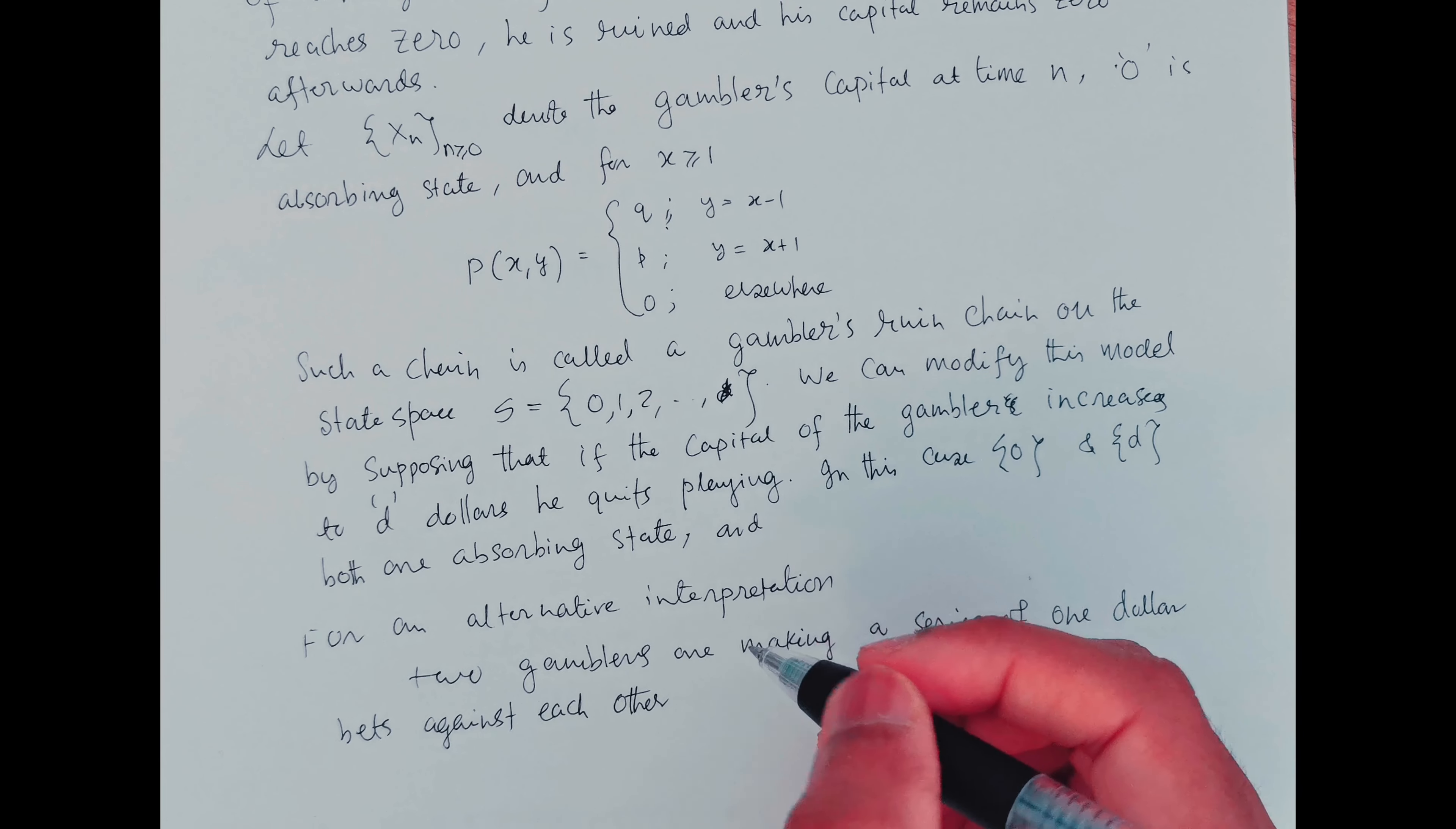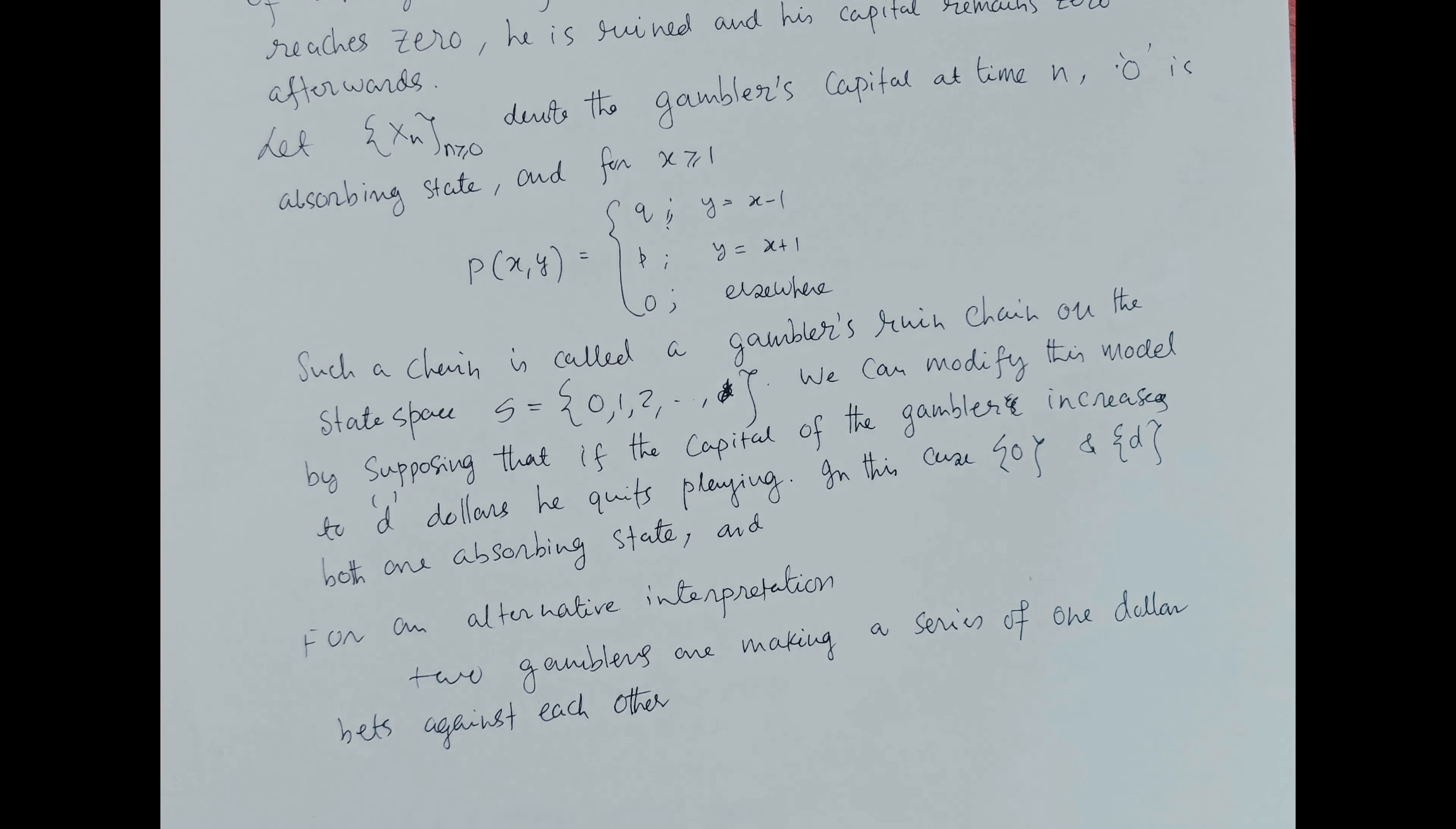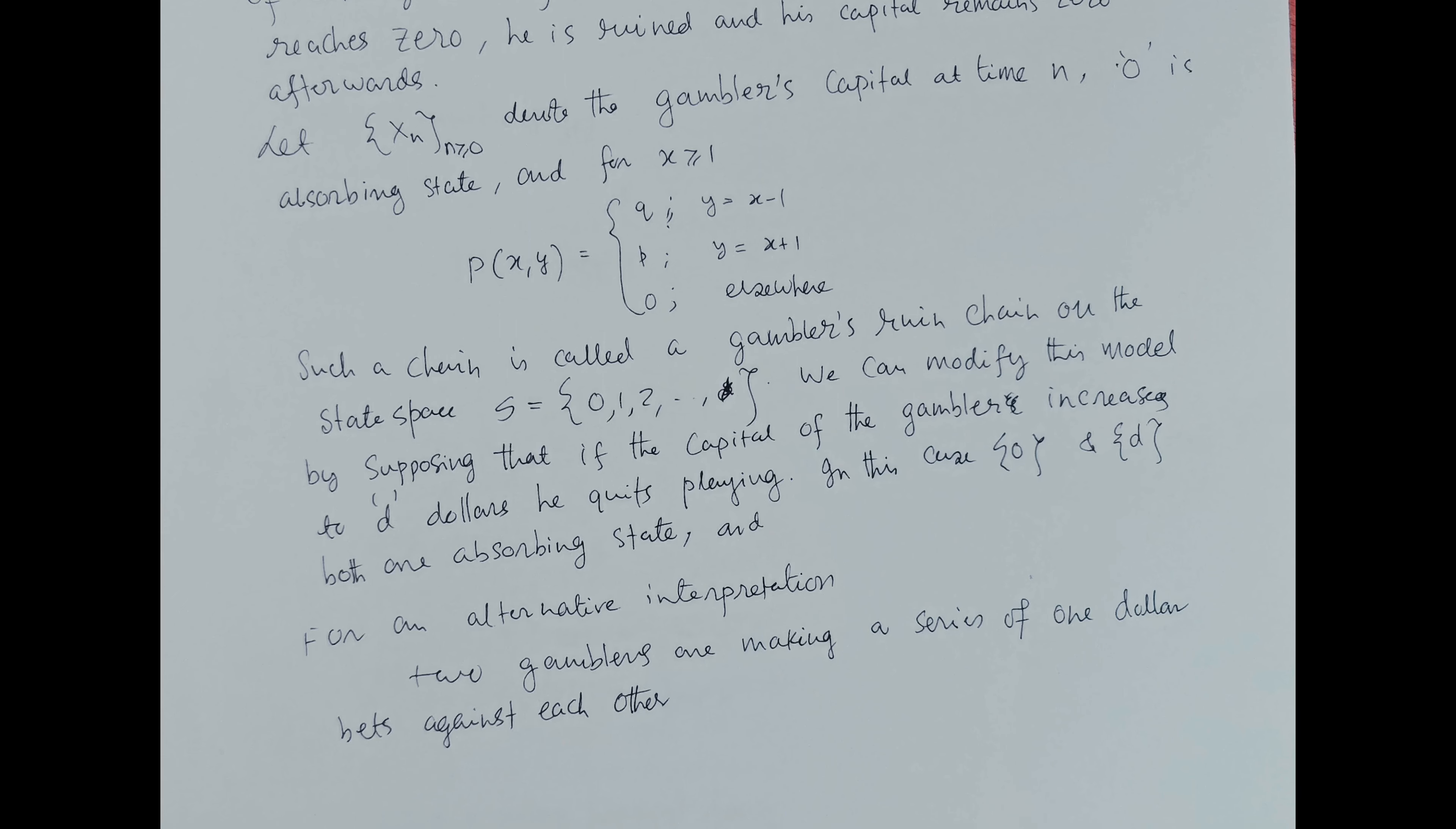And that between them, they have total capital of D dollars. Suppose the first gambler has probability p of winning any given bet, and the second gambler has probability 1 minus p, which is q, of winning.